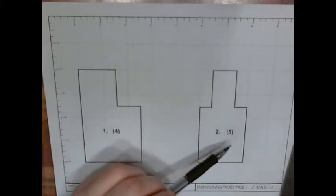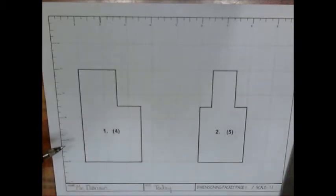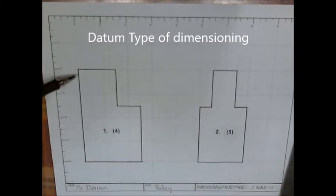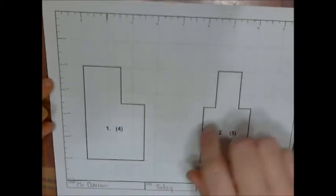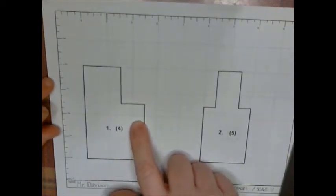All the objects need to be dimensioned using the datum type of dimensioning, meaning you're going to have to pick an edge that you dimension the whole thing off of. I am going to step you through number one and you can follow along with me. If you do it just like I do, then you'll have a perfect grade on the first drawing. So let's get started with this first object.